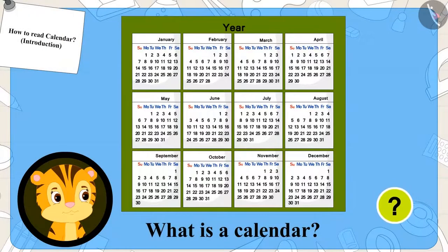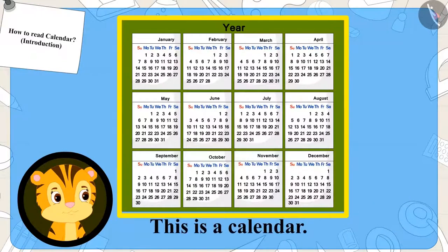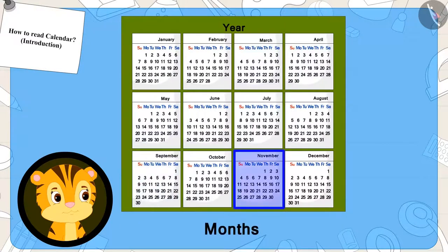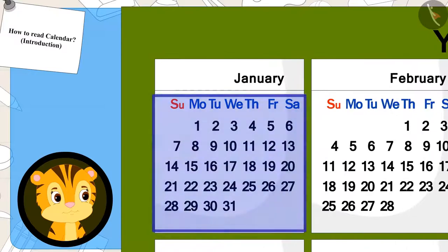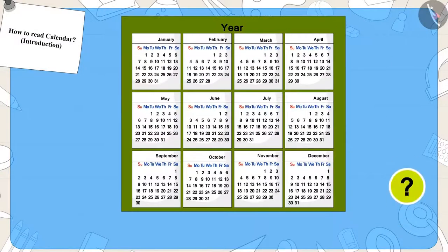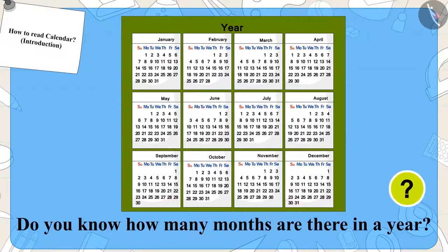Sher Khan's mother is explaining to him that this is a calendar. It depicts the months of the whole year and the days in those months. Children, do you know how many months are there in a year?